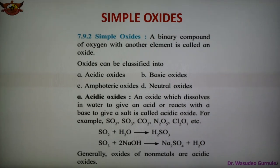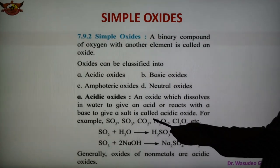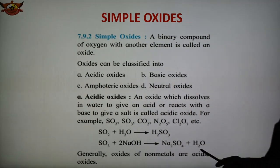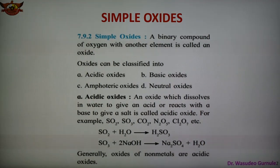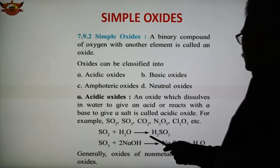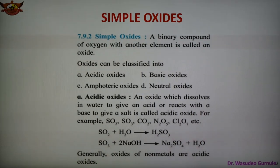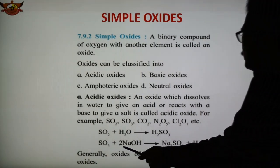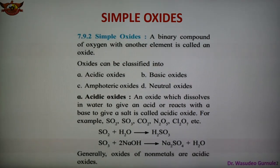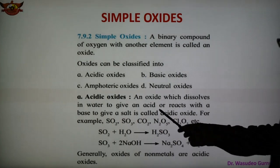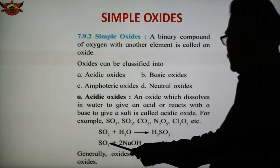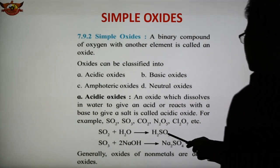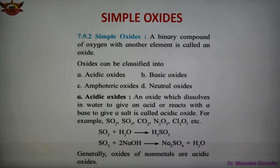Either the compound dissolves in water or it reacts with a base forming a compound — depending on that, it is acidic in nature. Examples are SO2, SO3, CO2, N2O5, Cl2O7. SO2 reacts with water forming H2SO3, and SO2 reacts with NaOH forming Na2SO4 and water. These oxides are acidic oxides, and oxides of non-metals are generally acidic oxides.